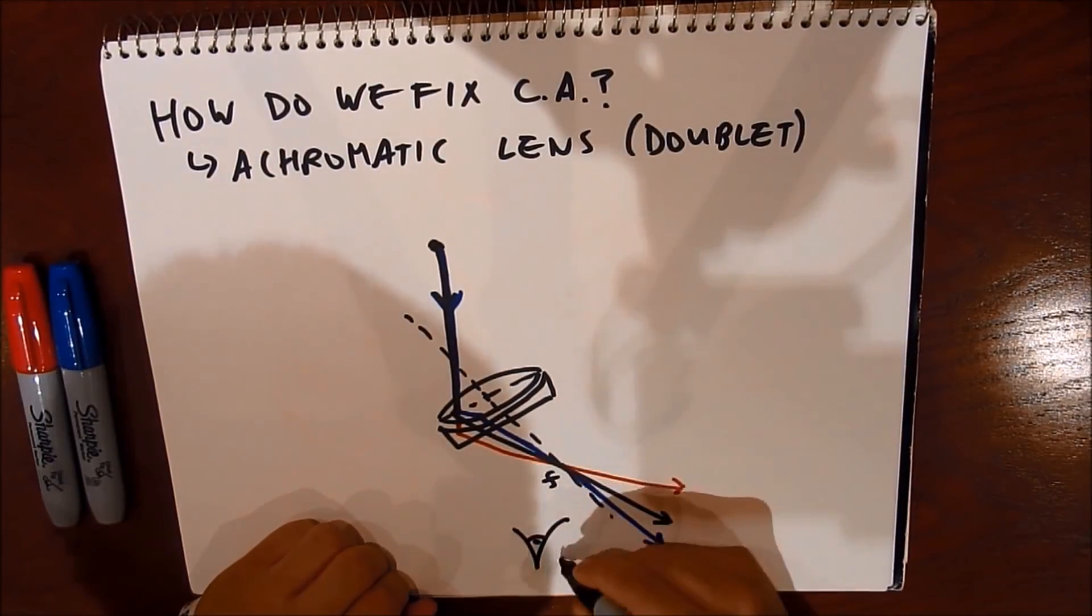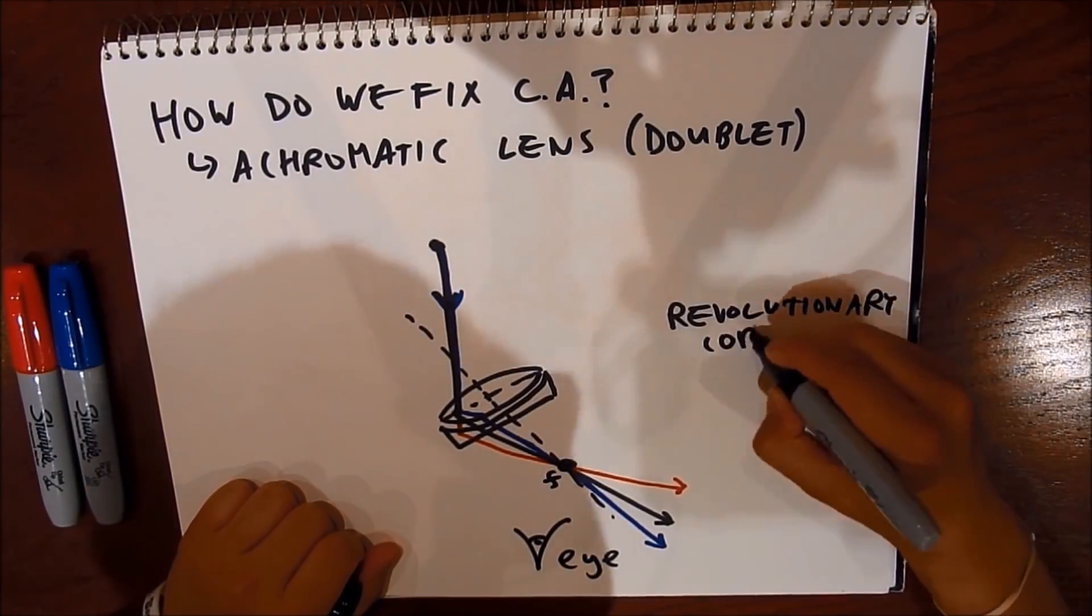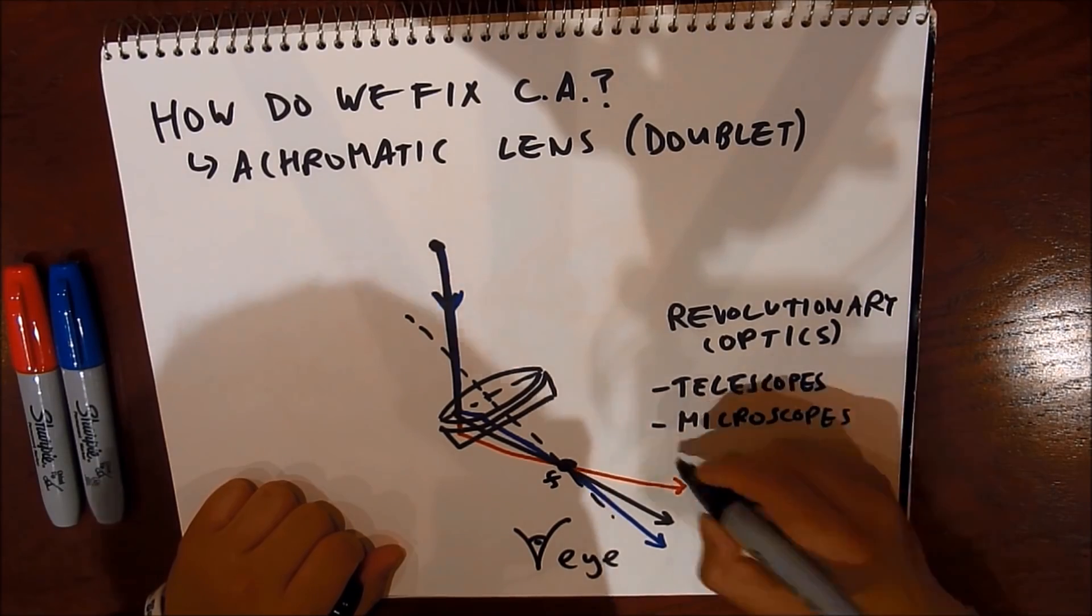They all come together at the focal point and our eye sees the image with no chromatic aberration. This is revolutionary in the field of optics and achromatic lens are used in telescopes, microscopes, and cameras.